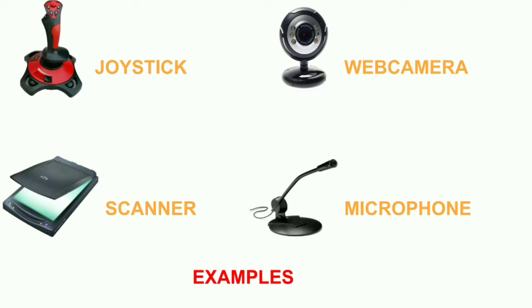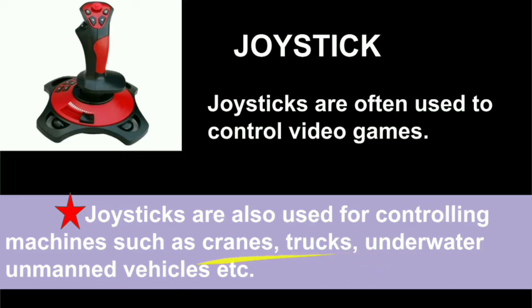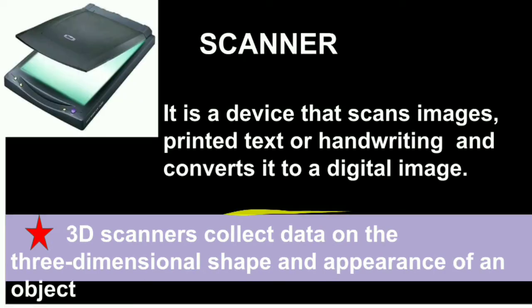Other input devices are joystick, scanner, web camera, and microphone. Let's see them one by one. Joystick — joysticks are often used to control video games, in order to move up and down and left and right. It has a center stick, and this joystick is also used in machines like cranes, trucks, and underwater unmanned vehicles in order to control them.